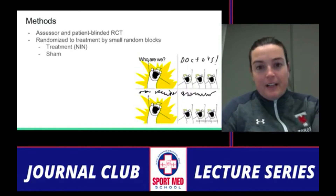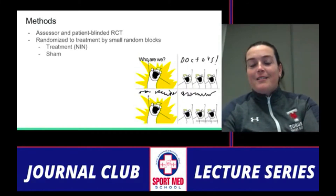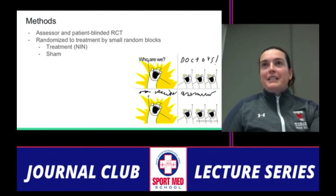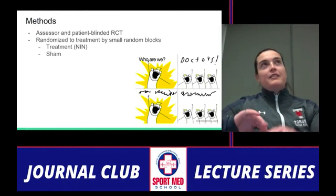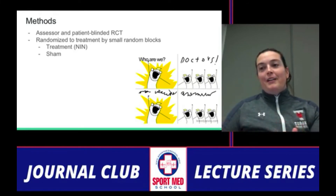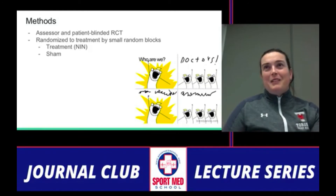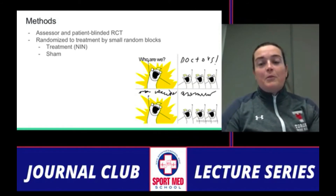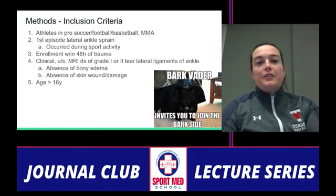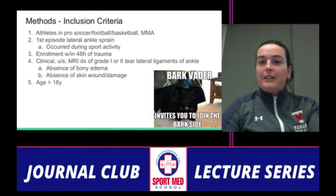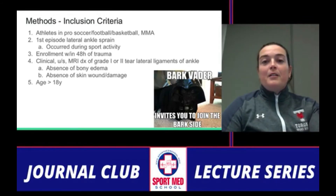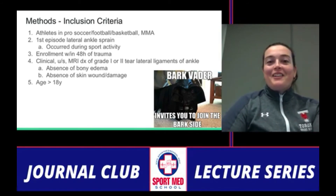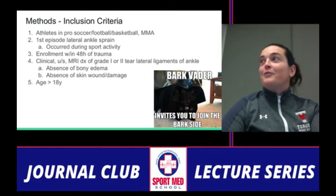They used an assessor- and patient-blinded randomized controlled trial. Due to the small sample size, patients were randomized in blocks to help balance the groups. They were randomized to either the NIN treatment or a sham group. Inclusion criteria required participants to be professional athletes in soccer, football, basketball, or mixed martial arts, and this had to be their first episode of an acute lateral ankle sprain — which likely excluded many elite athletes.